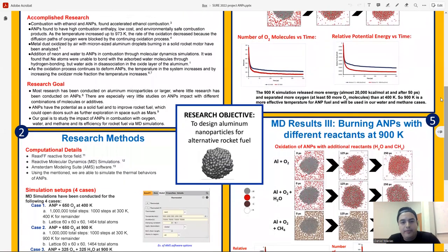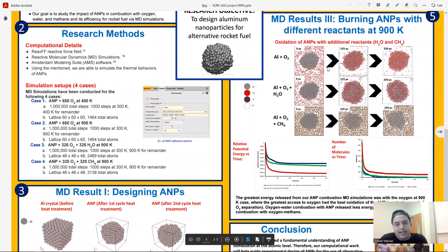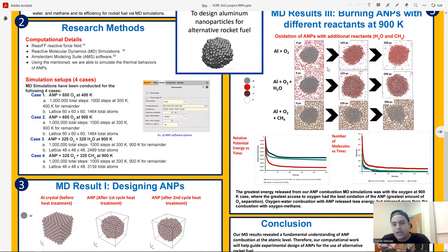I'm presenting our MD results number three, burning aluminum nanoparticles with different reactants at 900 Kelvin. After we found out that our 900 Kelvin simulation released more energy, we decided to run more simulations with different reactants at the same temperature to see if we could get more energy release. Supported by our poster pictures and graph, we concluded that our aluminum plus water simulation released more energy than our aluminum plus methane, but less than our original simulation aluminum plus oxygen. We believe this is the case because the simulation with greatest access to oxygen had the greatest amount of O2 separation.